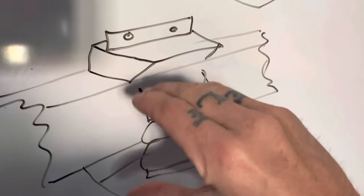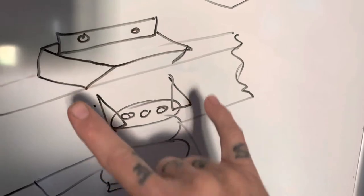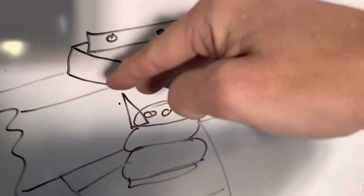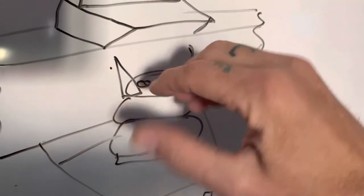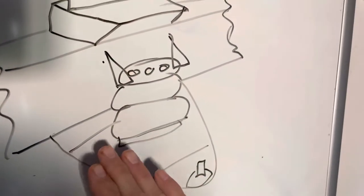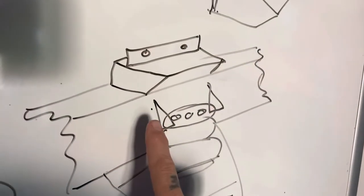So then you weld this plate with some gussets onto the frame and maybe even tie it into that so it's super strong. And then when that bag airs up, it's gonna push down on the lower control arm and up on the frame, filling it up.